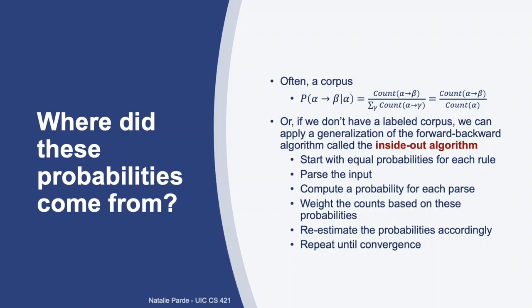So we just successfully walked through an example of probabilistic CKY parsing. You might be wondering where those initial probabilities associated with production rules came from, and the answer is quite often a corpus. We can check the number of times a certain production occurs in a corpus and divide that by the number of times the left-hand side of that production rule occurs overall, ending up with a probability very similar to what we previously did when computing n-gram probabilities.